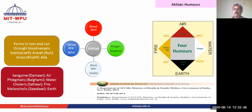The four humors are: blood (dam), phlegm (balgam), black bile (sauda), and yellow bile (safra). Each of these humors represents one element. Blood represents air, phlegm represents water, black bile represents earth, and yellow bile represents fire.